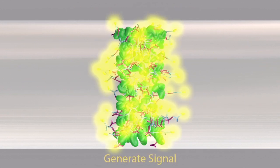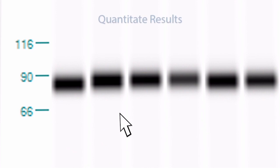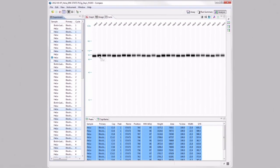This chemiluminescent reaction gives off light that is read by a CCD camera. Your quantitative results are automatically generated for you and reported by electropherogram or lane view.